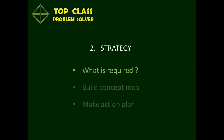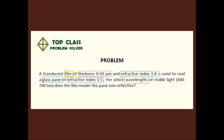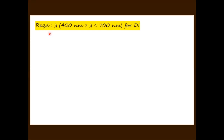The first step of the strategy is to determine precisely what is required. We need to find the wavelengths of visible light confined to the range of 400 to 700 nanometers for which the pane becomes non-reflective. We write all this information as that which is required.